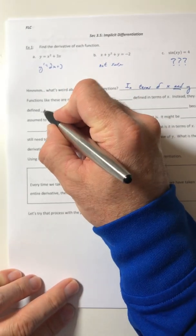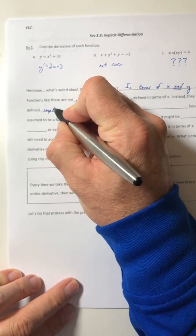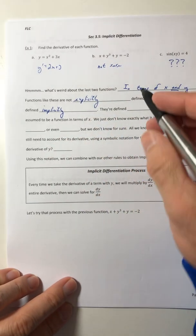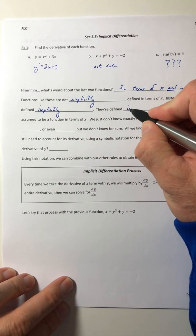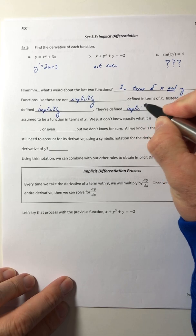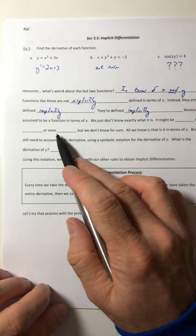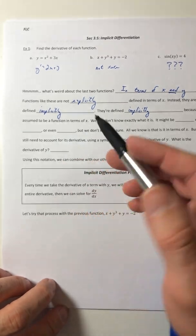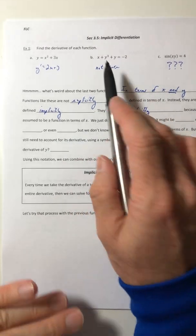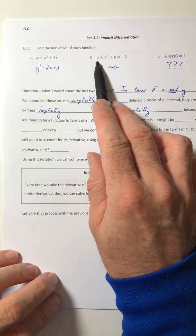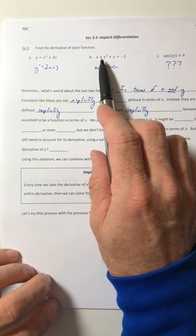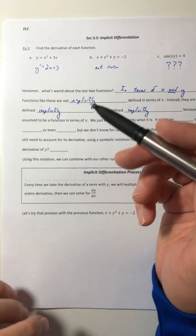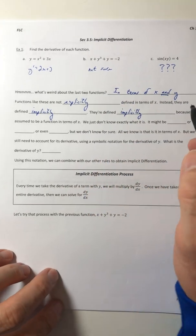So functions like these are not explicitly defined in terms of x. Instead, they are defined implicitly. They're defined implicitly because y is assumed to be a function in terms of x. So somewhere in there, it might be possible to figure out what y equals, like you could solve for it.